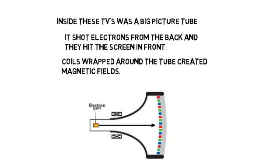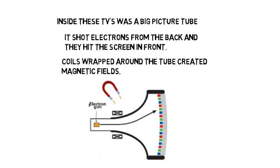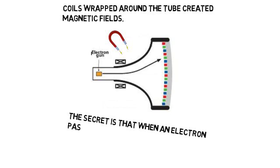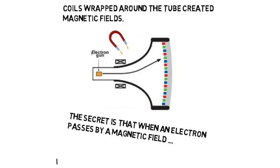But coils wrapped around the tube created magnetic fields. The secret is that when an electron passes by a magnetic field, it is attracted towards that magnetic field.